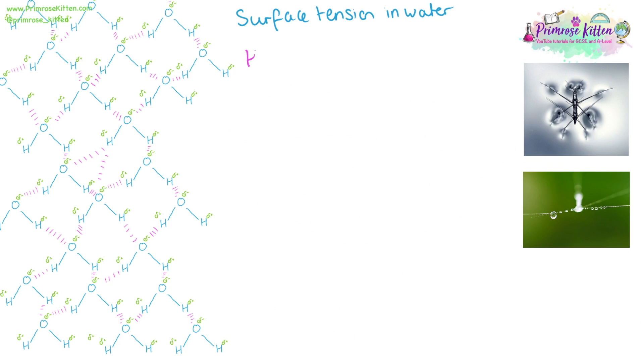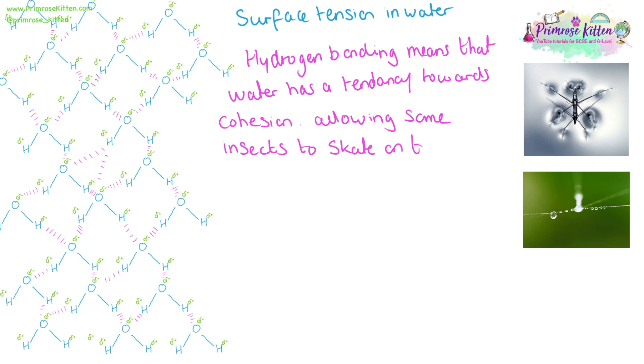The hydrogen bonding is also responsible for the surface tension in water. It means that water has a tendency towards cohesion, allowing some insects to skate on top of water, allowing droplets to form, and allowing for water to be drawn up the xylem in plants.